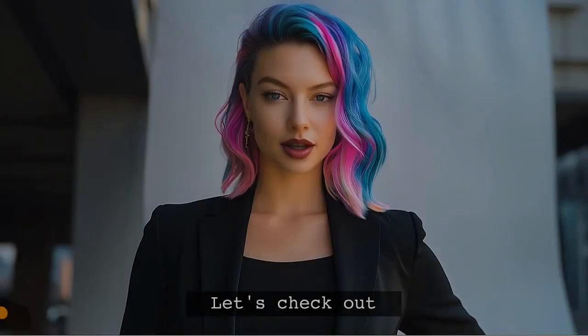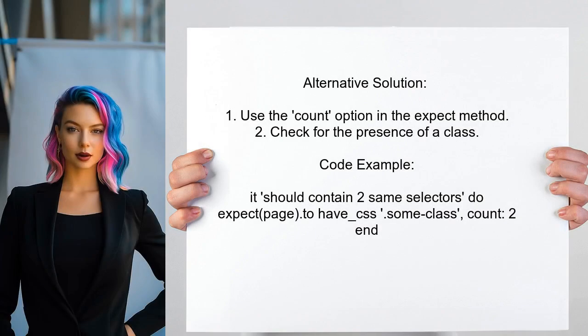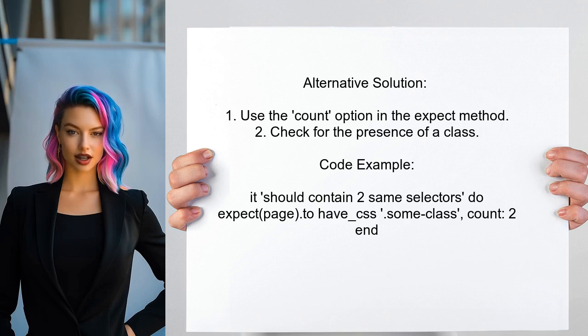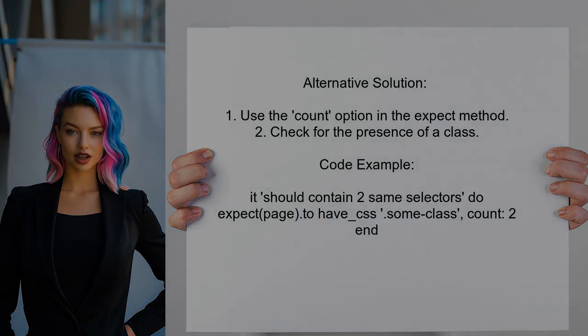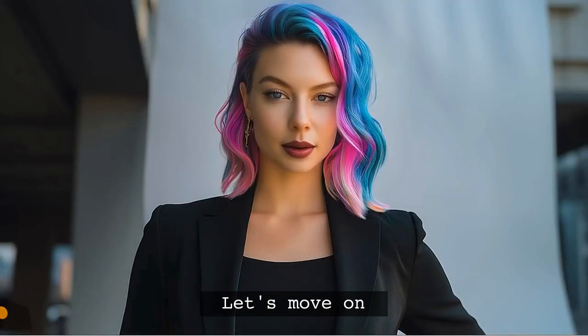Let's check out another perspective from a different user. An alternative solution suggests using the `count` option in the expect method — checking for the presence of a specific class by specifying the count of occurrences you expect.